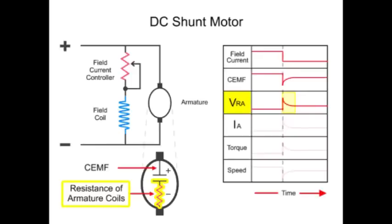Because the total applied voltage is across the armature, any change in the drop across one part of the armature, either the CEMF or the voltage drop across the resistance of the armature coils, VRA, will be made up by an increase in the drop across the other component.